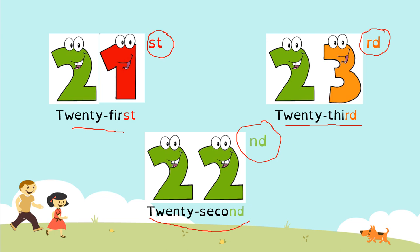Be careful, boys and girls. You have to do the same when you are talking about 31 — you don't say 31, you say 31st. Or 32 is 32nd. And you have to do the same with 40, 50.